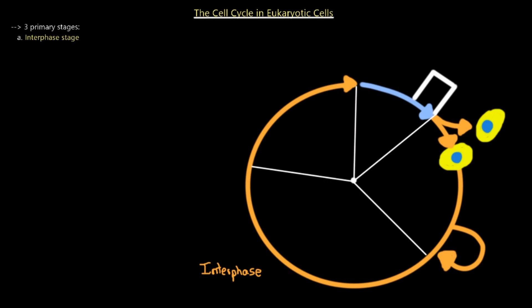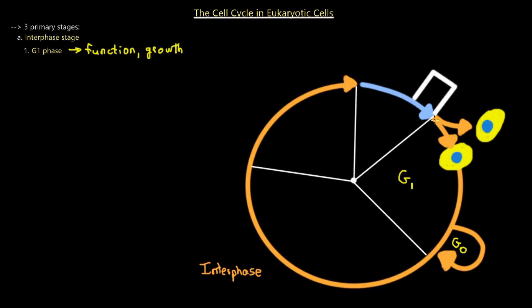Now we're going to take a look at the cell cycle in eukaryotic cells. The eukaryotic cell typically undergoes three primary stages, outlined here in three different colors. The big long cycle is called Interphase — that's the first one we're going to discuss. Interphase comprises three phases of the cell cycle. The first phase is called G1 phase, in which the cell carries out its function and in some cases grows — function and growth.